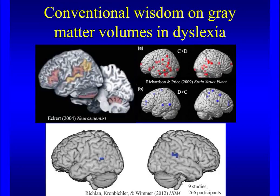When researchers carried out a proper meta-analysis, they found much less consistency across studies. In fact, the only spot in the brain where a significant difference was found between controls and dyslexics in terms of gray matter volume was a small region in the posterior part of the superior temporal gyrus. So when properly meta-analyzed, the data shows less consistency than previously thought.